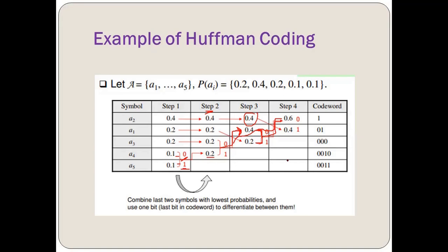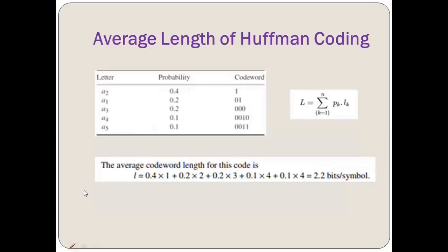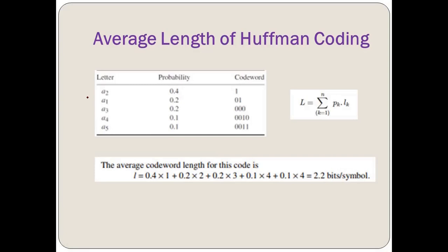All the codes are variable length — none of the codewords have fixed length. The least probable symbols have the maximum length codewords, and the symbol with the highest probability has the minimum length codeword. To summarize: A2→'0', A1→'01', A3→'000', A4→'010', A5→'011'.